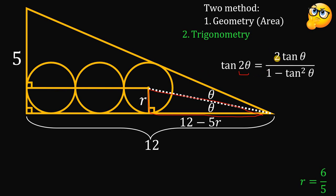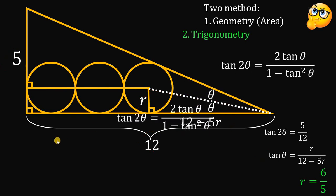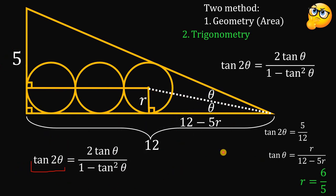We use the identity: tan(2θ) = 2·tan(θ) / (1 − tan²(θ)). From the big right triangle, tan(2θ) equals the opposite side 5 over the adjacent side 12, so tan(2θ) = 5/12. From the small right triangle with angle theta, tan(θ) equals the opposite side r over the adjacent side (12 − 5r).